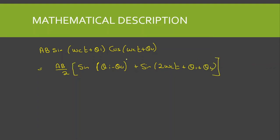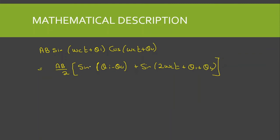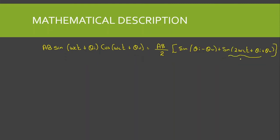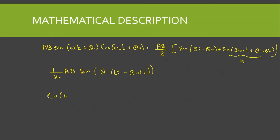This is the output of the multiplier using the trigonometric product formula. The sum frequency term sin(2ωct + θᵢ + θ₀) is suppressed by the low pass filter. As a result, the effective input to the loop filter is (AB/2)·sin(θᵢ(t) − θ₀(t)). If h(t) is the unit impulse response of the loop filter, then the output of the loop filter E₀(t) = (AB/2)·sin(θᵢ(t) − θ₀(t)) convolved with h(t).